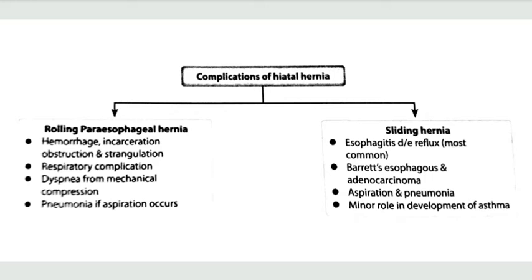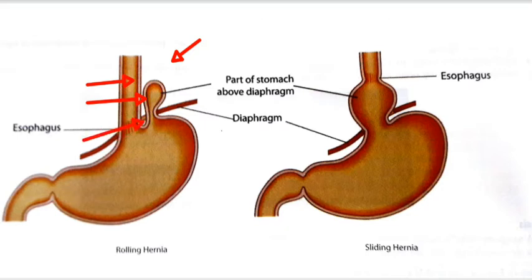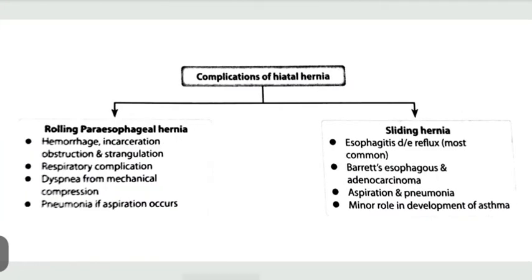In rolling type (paraesophageal hernia), the herniated part of the stomach enters the thorax and may compress the lungs, causing respiratory complications and dyspnea. Since this hernia has a fundus, body, and neck, the neck can become obstructed, leading to reduction in blood supply, strangulation, and hemorrhage. Aspiration is very uncommon in rolling type paraesophageal hernia, so pneumonia is rare in this case.